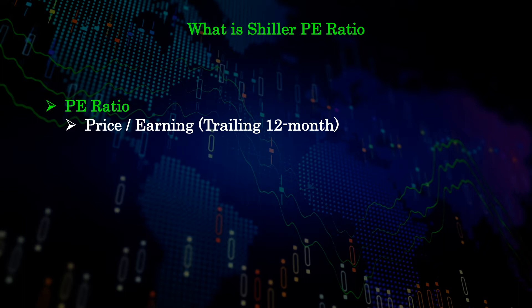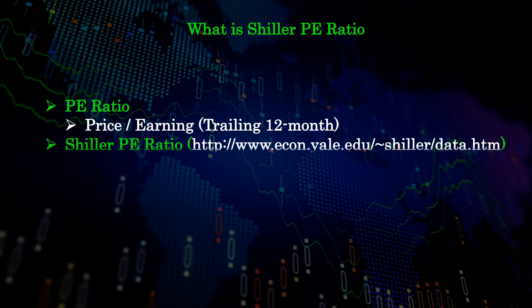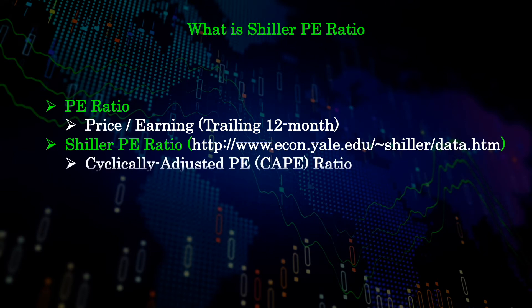Robert Shiller, a Nobel laureate in economics, and his colleagues invented the so-called Cyclically Adjusted P/E ratio, or in short, the CAPE ratio. Because of his contribution, CAPE is often referred to as the Shiller P/E ratio.